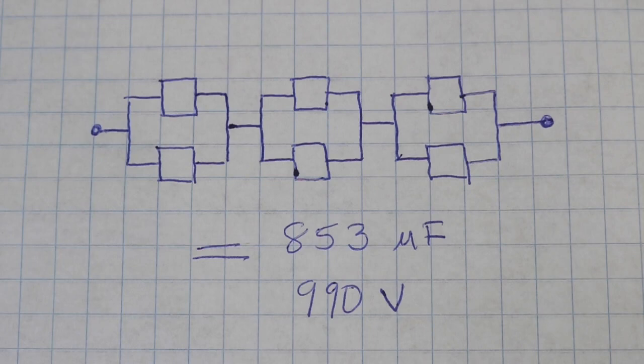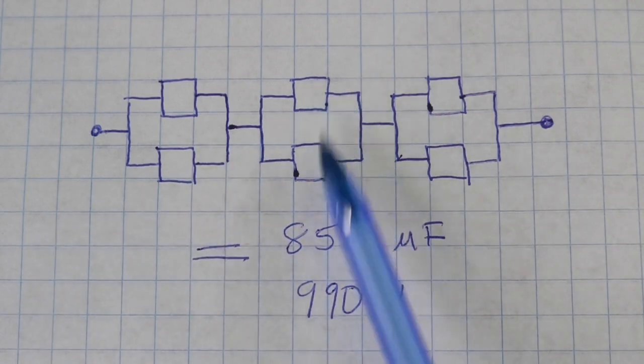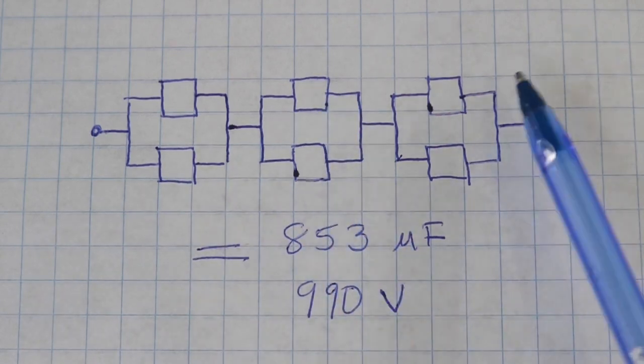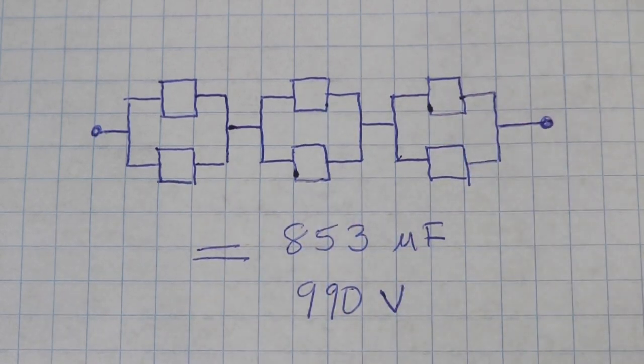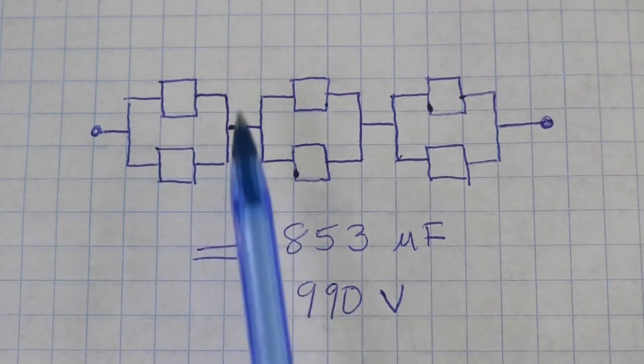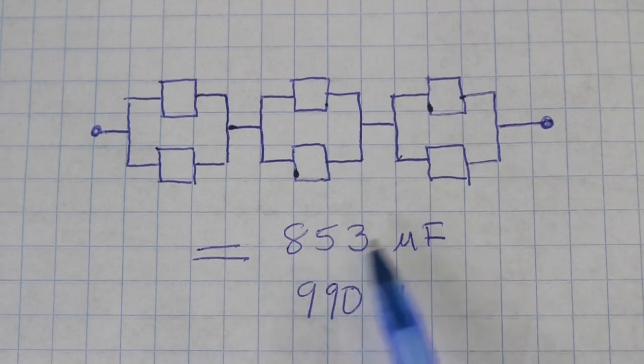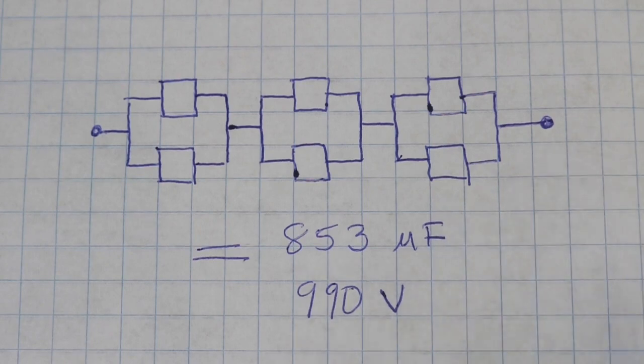I will use a combination of series and parallel connection: two groups in parallel, another two also in parallel, and the remaining two in parallel, and the three pairs connected in series. This will give a total of 853 microfarads at 990 volts.